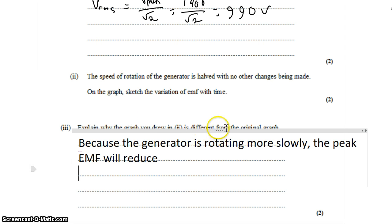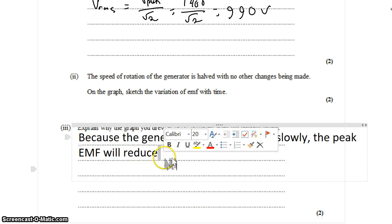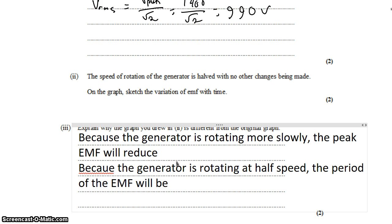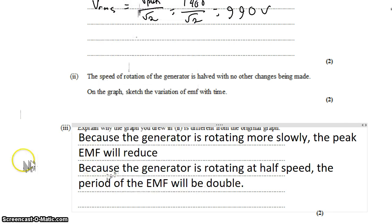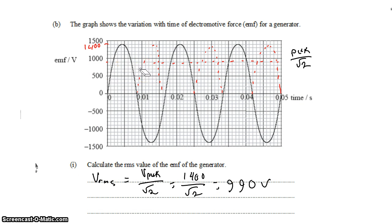At the same time, and this is the tricky one, this is the one that students always forget. But because it's rotating more slowly, it's going to take twice as long for a full rotation to take place. So the period of the EMF will be double. So not only does the peak drop by half, the period doubles. Which is because it takes longer for the generator to get all the way around into a full period of motion.